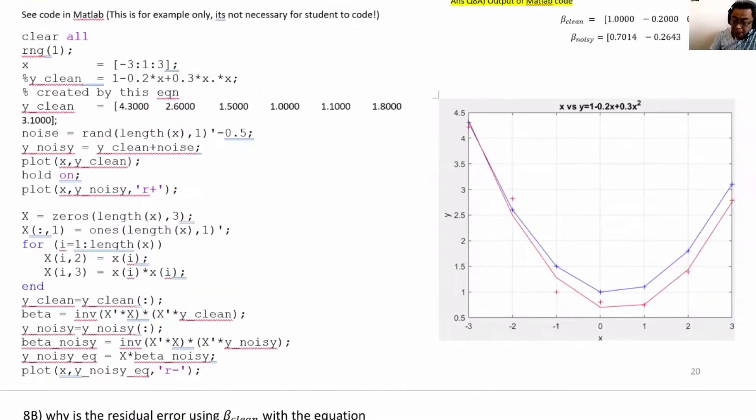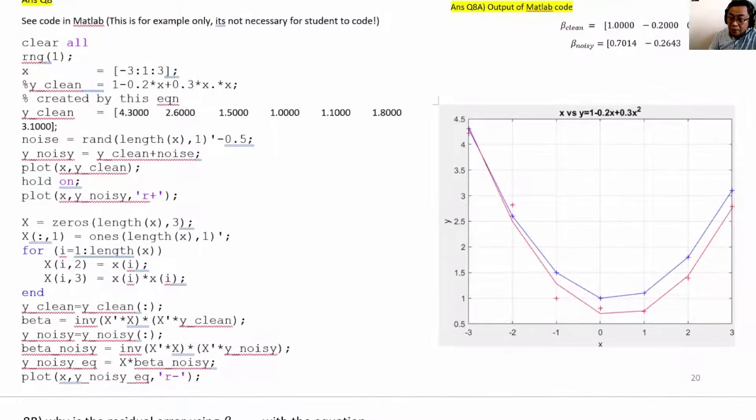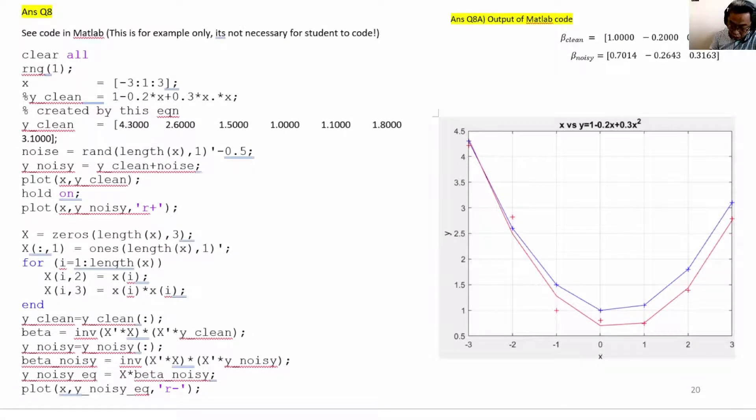Let us see how we do it in MATLAB. For MATLAB, the idea is that you should learn how to use the tool. In the exams, we will not ask you to write MATLAB questions. First, clear all means clear all the variables. Set the random number generator seed to be one so that we can always repeat what random numbers will be generated.